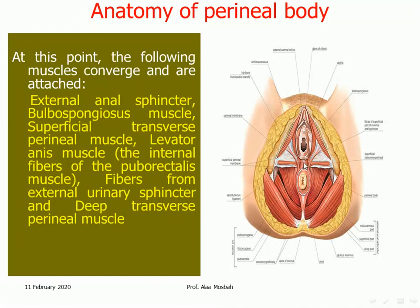The perineal body is the meeting point of different muscles from both sides, like the external anal sphincter, the transverse perineal muscle — superficial and deep — the bulbocavernous muscle, fibers from the external urinary sphincter, and the puborectal portion of the levator ani muscle.